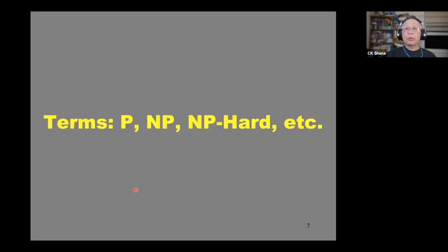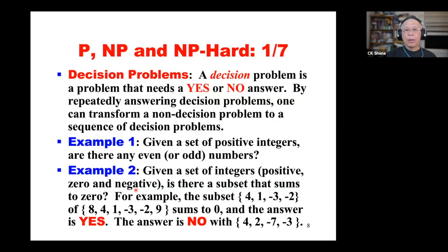We now move on to explaining certain terms: P, NP, NP-complete, and NP-hard. You will learn these in algorithm or formal language courses. Here the discussion is intuitive — you don't need any previous knowledge to understand what's going on. First, let's explain what a decision problem is.